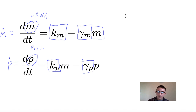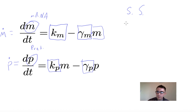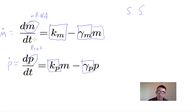I'll quickly show how to find the steady states of these equations. A steady state is a state where no change is occurring — things are steady. Since the derivative is the rate of change, if we're looking for a state where there's no change happening, we simply set the derivative equal to zero and solve for what we're interested in.